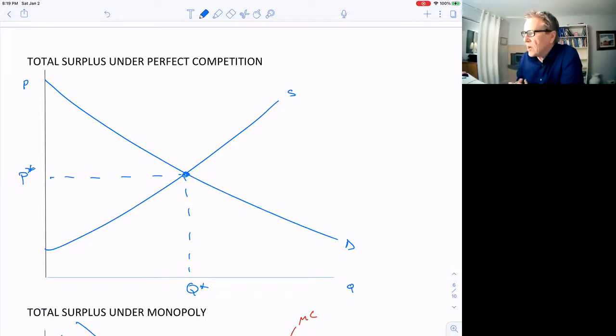Everything below the demand curve and above the price is the consumer surplus, and everything above the supply curve below the price is the producer surplus. And this market is efficient because we're maximizing total surplus.